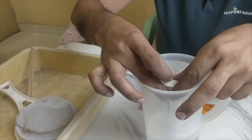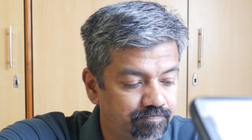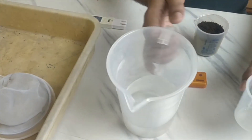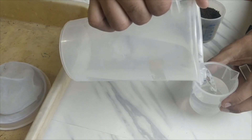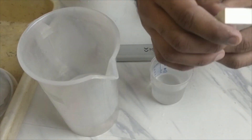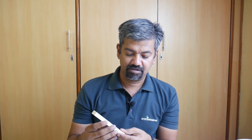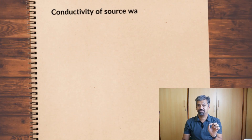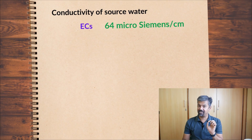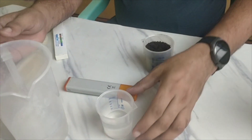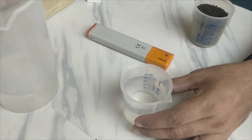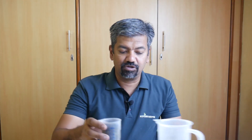I use a conductivity meter to take a sample and measure it. I'm getting 64 microsiemens — so make a note of your source water's conductivity. We've noted that down as 64. Now we have to mix one part of cocopeat with two parts of water, so I'm going to take exactly 100 ml and put this 100 ml of cocopeat into this jar.